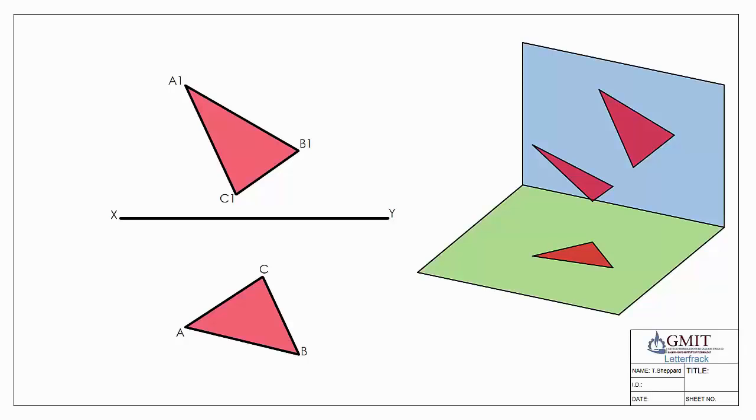So rather than taking an auxiliary to find the true length of one of our edges and then a second auxiliary to find the point view of it, what we're going to do here is we're going to create a level line using the existing object. And the approach that we take is we use a horizontal section.